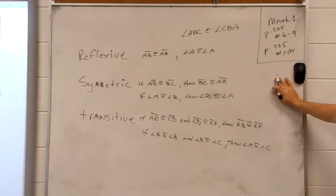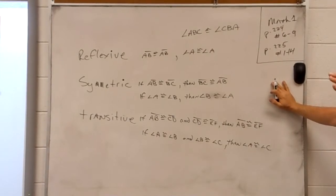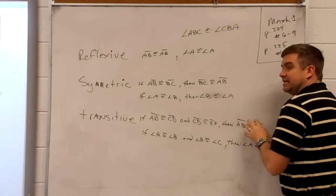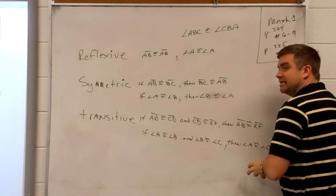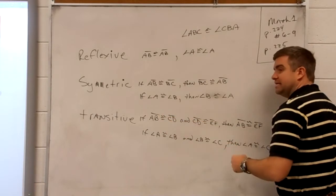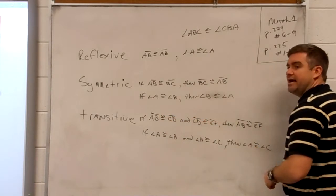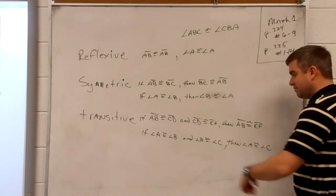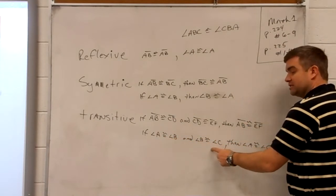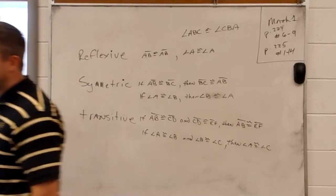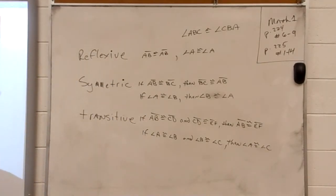Now the transitive property. A clue that it's transitive: it always has three parts — if this and this, then this. If AB equals CD and CD equals EF, then AB is congruent to EF — the first equals the last. Same for angles: if angle A is congruent to angle B, and angle B is congruent to angle C, then angle A is congruent to angle C by the transitive property.